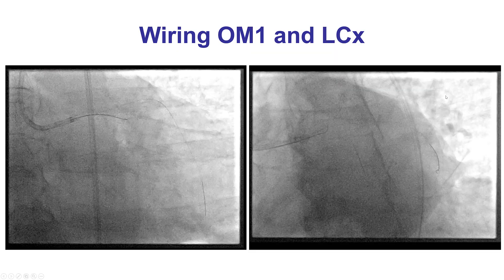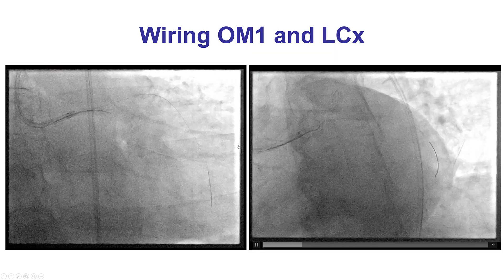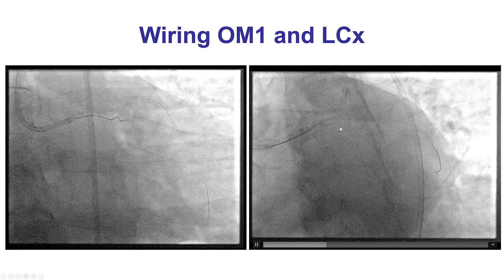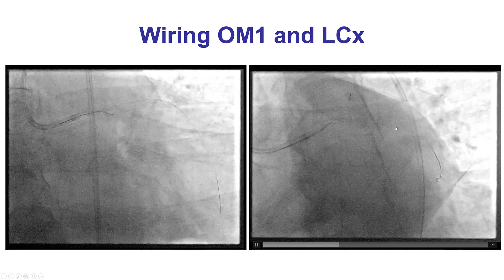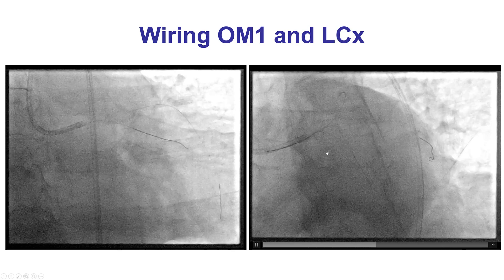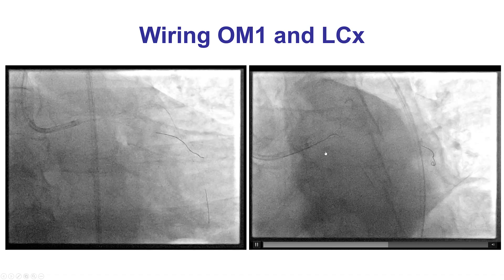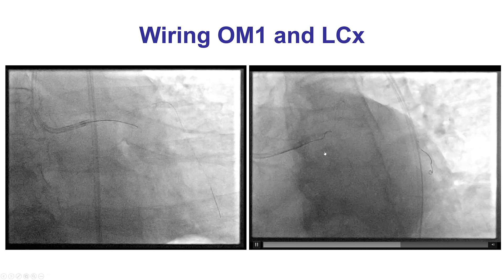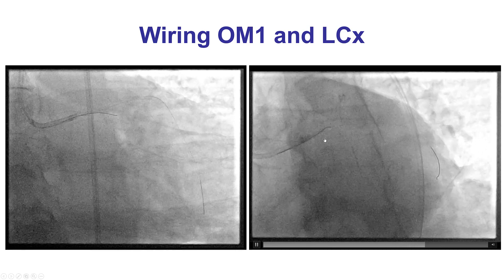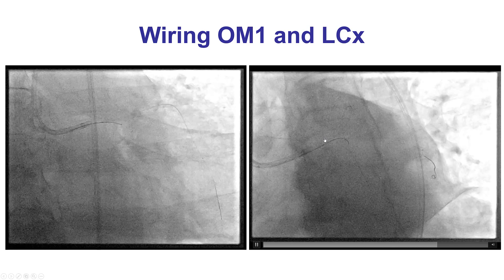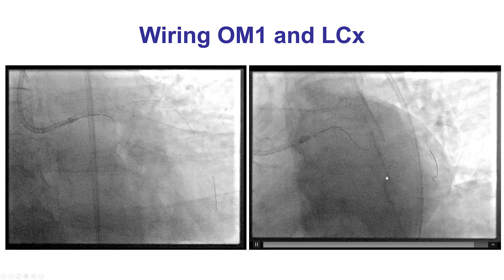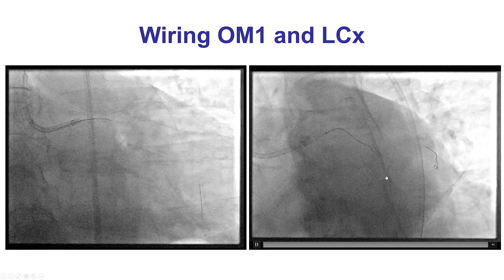Both the LAD as well as the circumflex and a large obtuse marginal branch were successfully wired using workhorse guide wires. This was accomplished using as a roadmap the images that had been obtained during the diagnostic angiogram.